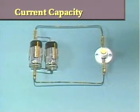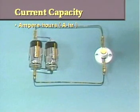The term ampere-hours, abbreviated A-HR, is used to indicate the current capacity of a cell. In other words, how much current the cell can supply for a period of time.